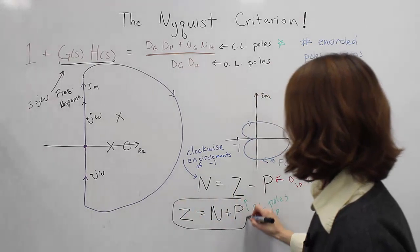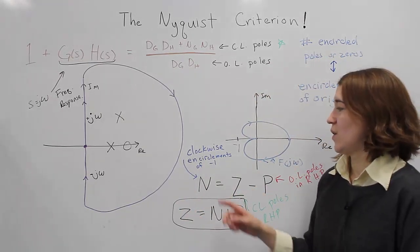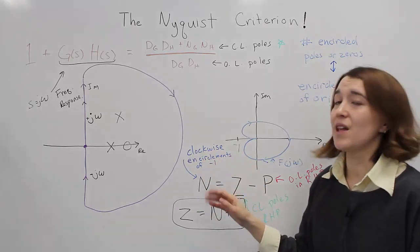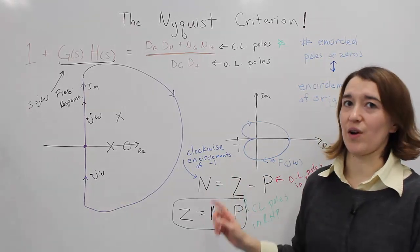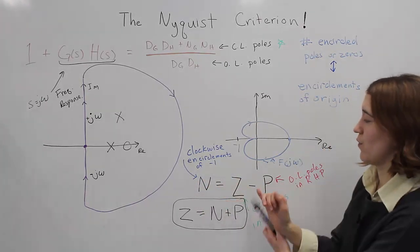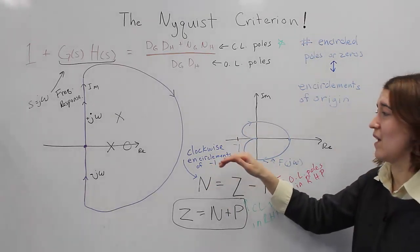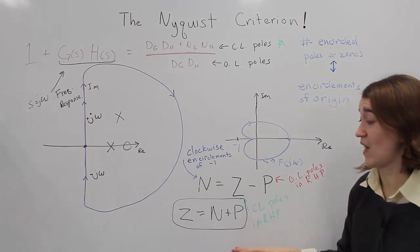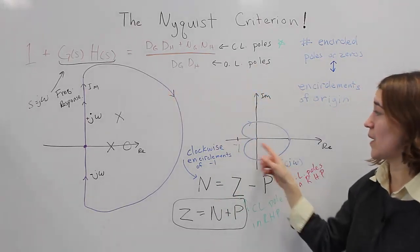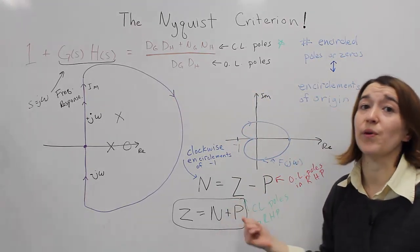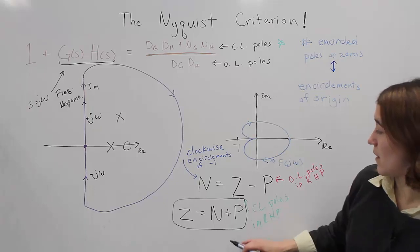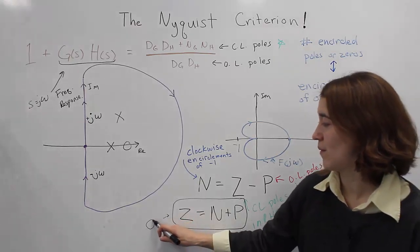One important note: this notation uses clockwise encirclements of negative one. Some books and resources use counter-clockwise encirclements, in which case the equation changes slightly — N would equal P minus Z, so just be conscious of that. If we know the open-loop poles in the right half plane, we can draw the Nyquist diagram, count the encirclements, and determine the number of closed-loop poles in the right half plane. For stability, we want Z to equal zero.